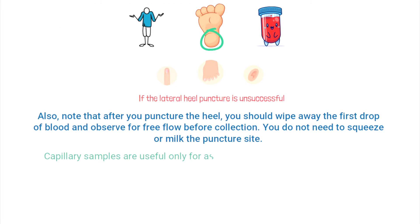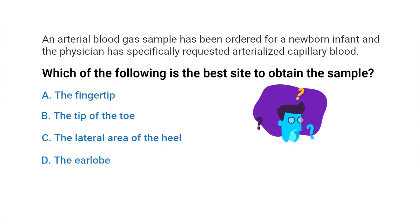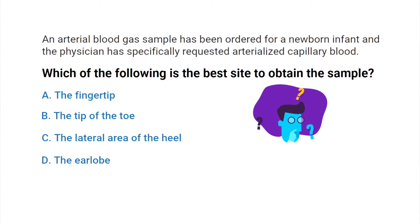Here's another important thing to remember: capillary samples are useful only for assessing the infant's acid-base status, not their oxygenation status. The pH and PaCO2 correlate well with arterial blood; however, the PaO2 does not. So the acid-base parameters from capillary blood correlate well with arterial blood, but the oxygenation parameters do not correlate well.